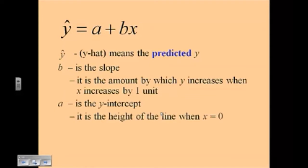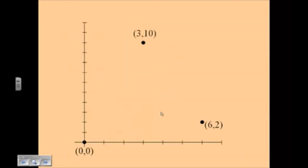A, of course, is the y intercept. It is the height of the line when x equals 0. And in some situations, the y intercept will have no meaning at all, so you have to be very careful about that when you're explaining in context.